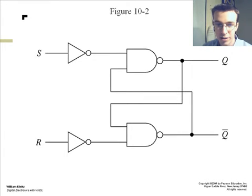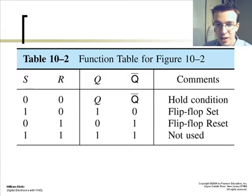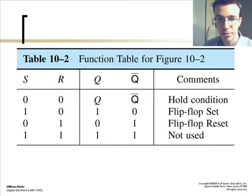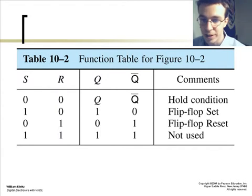You can also have the reverse happen by inputting an inverter in the set and reset inputs. This basically switches your inputs but the same set reset not used and hold conditions hold true. The only thing that changes are your Q and Q naught values.